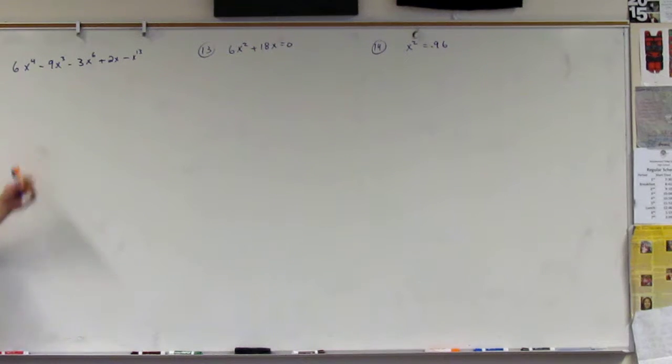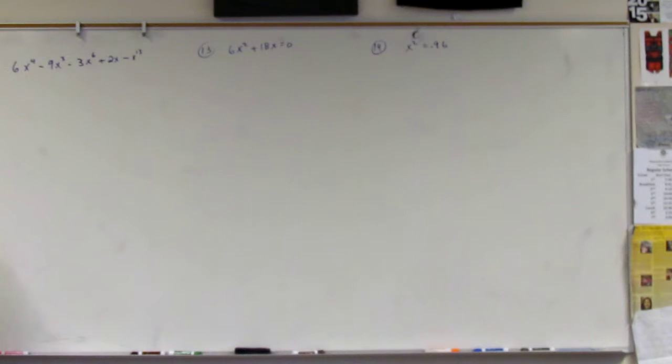We've got to put this in order, right? So what goes first? Thirteen, six. Negative x to the 13th, then what? Minus 3x to the 6th, right?